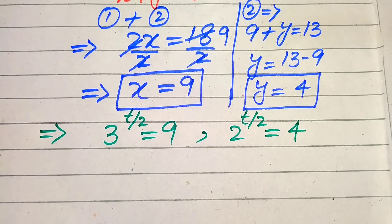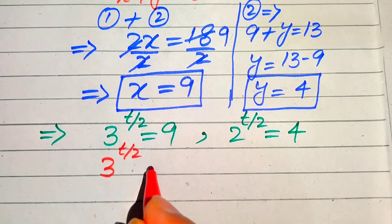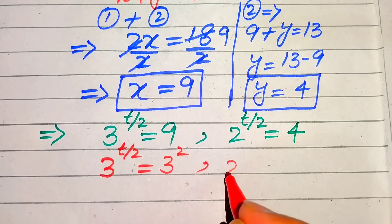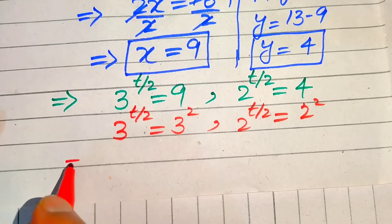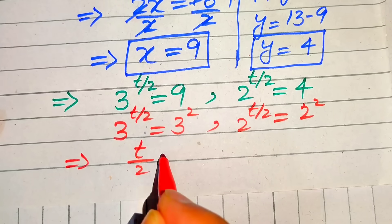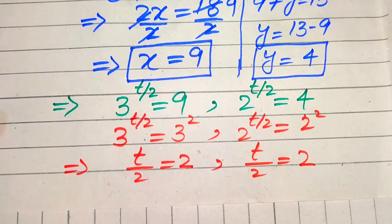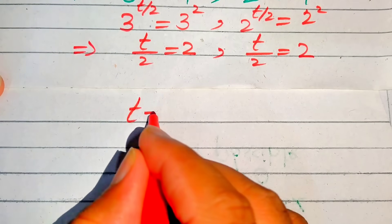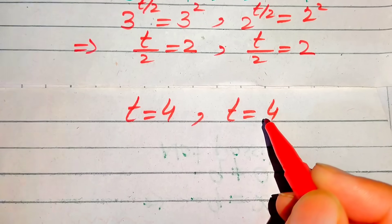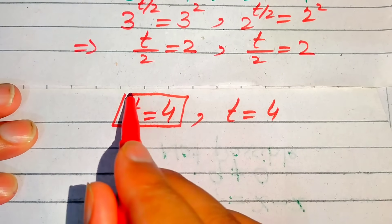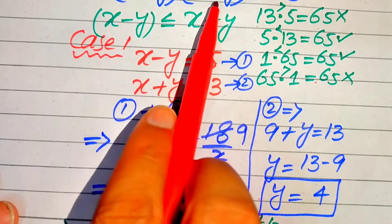We rewrite the right-hand sides: 9 as 3 squared and 4 as 2 squared. Comparing the exponents, we get t over 2 equals 2 in both cases, so t equals 4. From both sub-cases in Case 1 we get the same value t equals 4.